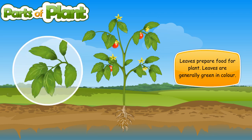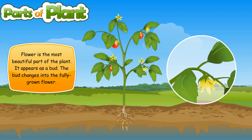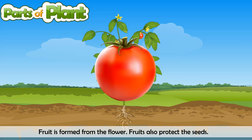Leaves prepare food for the plant. The flower is the most beautiful part of the plant, and it first appears as a bud. The fruit is formed from the flower, and fruits also protect the seeds.